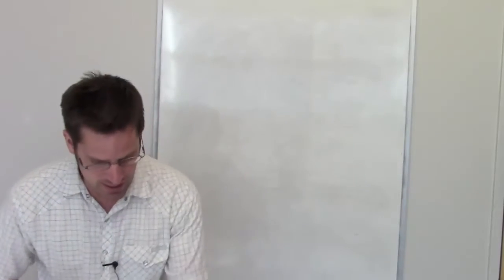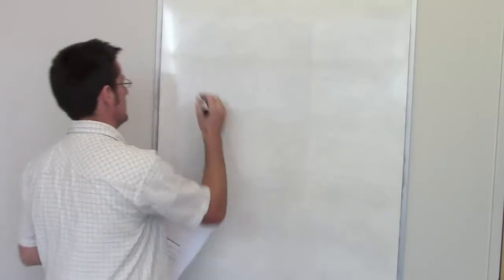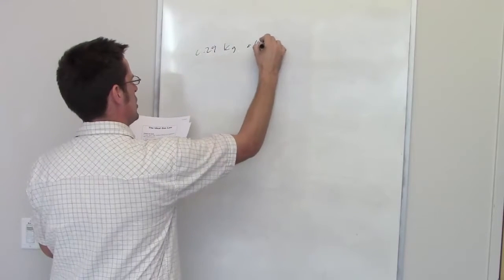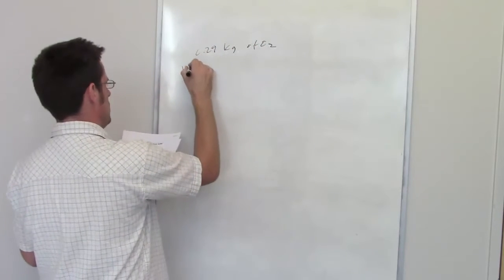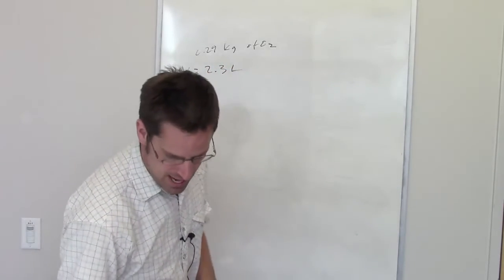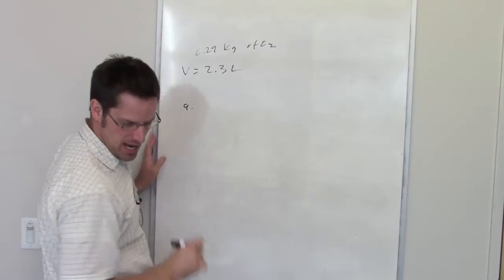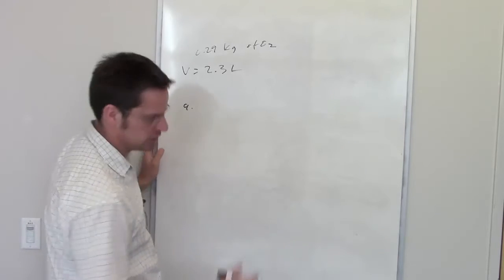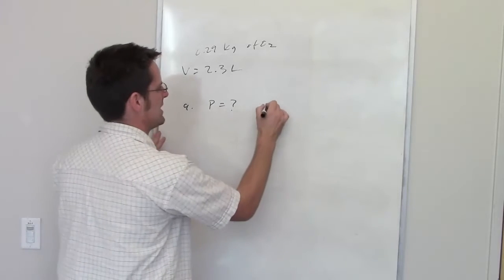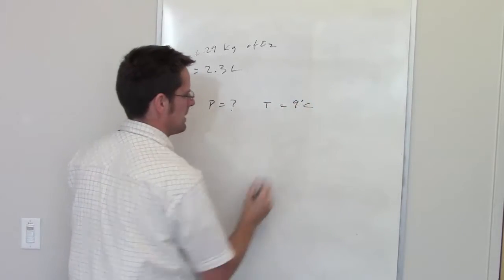This question tells us that a scuba diver's tank contains 0.29 kilograms of O2 compressed into a volume of 2.3 liters. It then asks us two things. Part A says calculate the gas pressure inside, so it asks us pressure. If the temperature is equal to 9 degrees Celsius, let's begin by tackling that one.